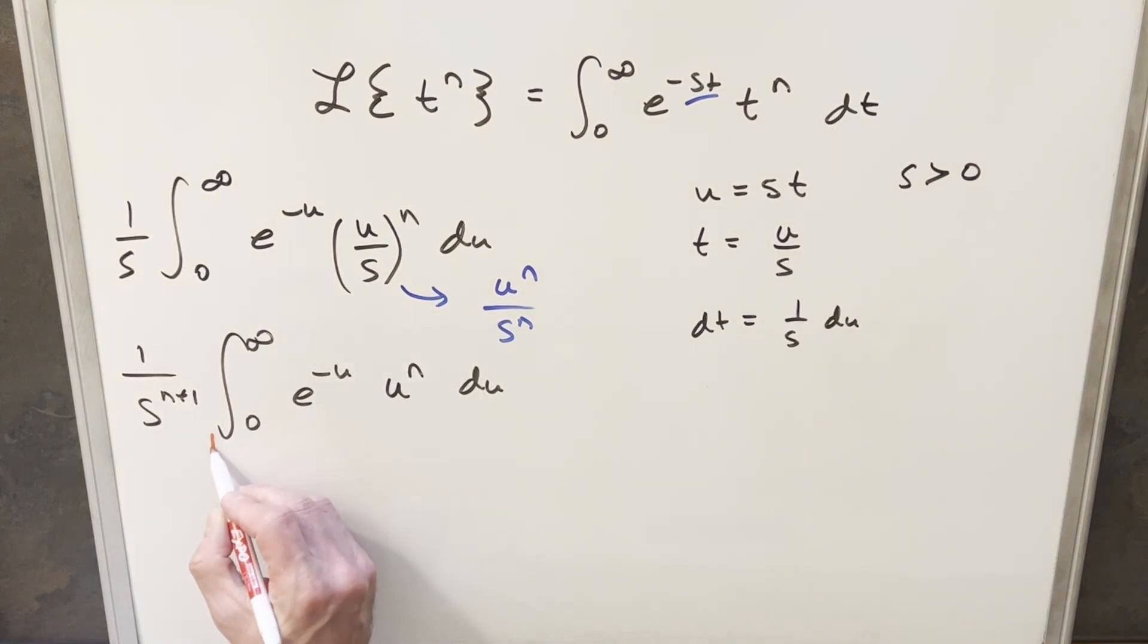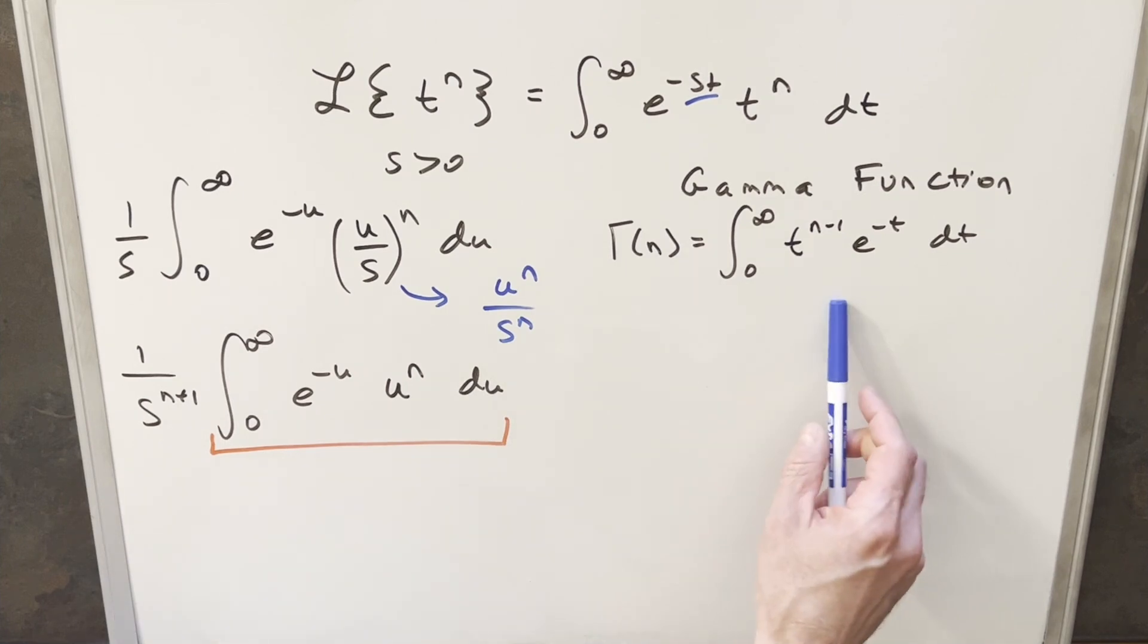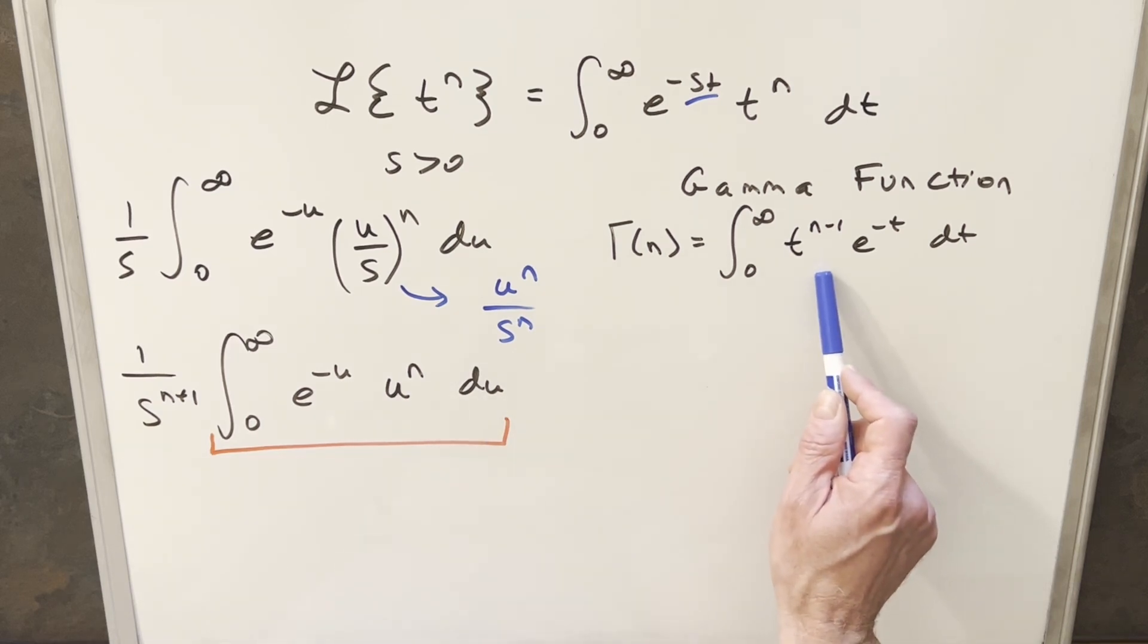But this s to the n is just a constant value, so I can bring it out front of the integral and multiply it times this 1 over s. So when I do that, we just have 1 over s to the n plus 1. Then we'll just rewrite all this other stuff. But when we look at the integral that we have and what's left, this thing we have right here is in exactly the right form for us to use the gamma function.